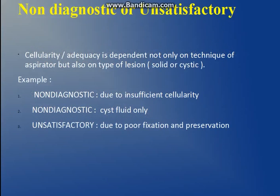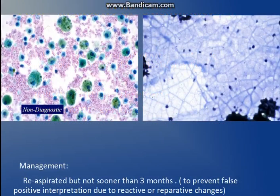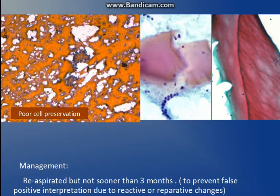Non-diagnostic is due to insufficient cellularity, or if only cyst fluid is present, or even if cells are present but we cannot make them out because of poor fixation, preservation, or poor staining — these all fall in the non-diagnostic category. These cases need to be re-aspirated after 3 months — not before — because reactive and reparative changes can give false positive interpretations.